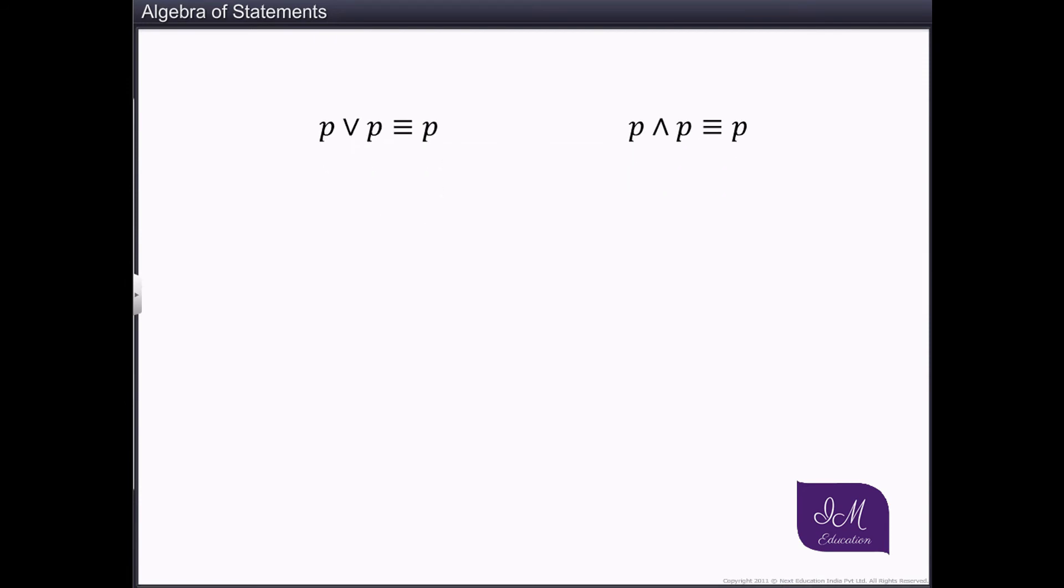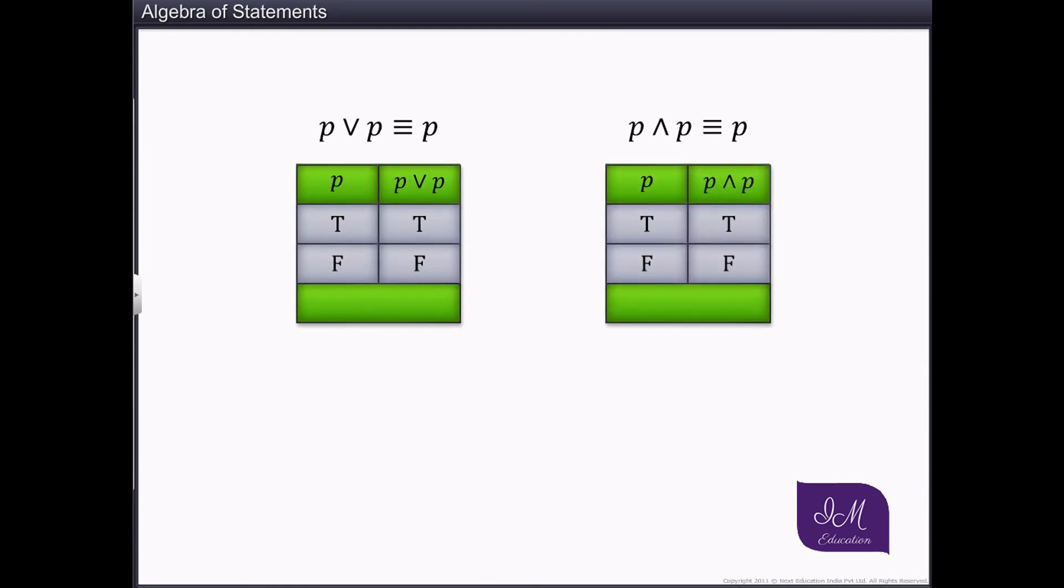Let's construct the truth tables for the compound statements P or P and P and P. Clearly, the truth values of P and P or P are equal.